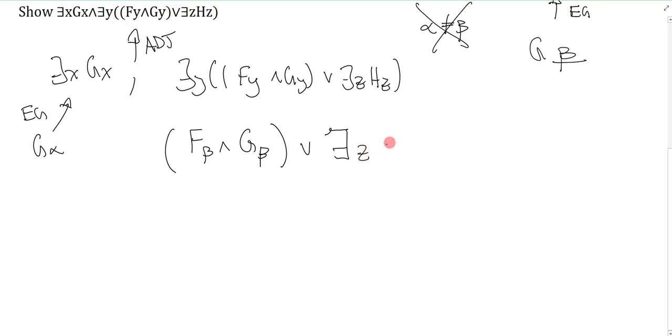So if I got this, I could then existentially generalize up. Now this is a disjunction, so that means I could just get F beta and G beta on its own, or I could get there exists a z H z on its own, and I could addition the other half. How do I get this? Well, this is just some H blank. As long as it's not alpha and it's not beta, I don't know, how about epsilon? Doesn't matter.